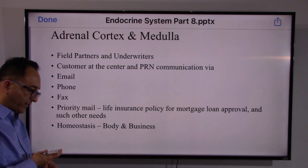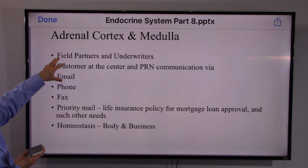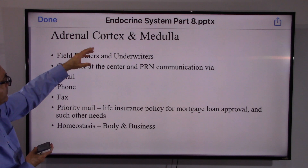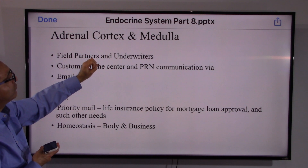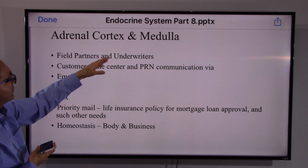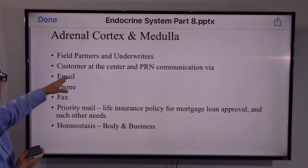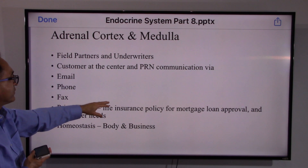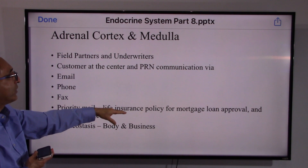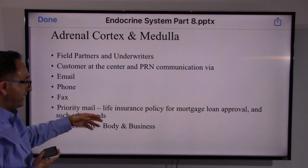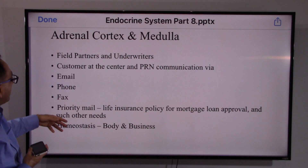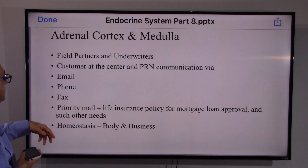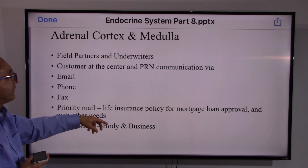To summarize: the cortex does certain things, and the medulla mimics how the nervous system works in anxiety and stress. For example, when a customer has a priority to get a life insurance policy as a requirement for a mortgage, and approval is taking long, there is anxiety and stress — needing to get it done quickly. We can use email, phone, fax, and we all work together to serve the customer.